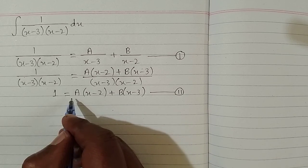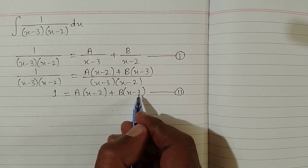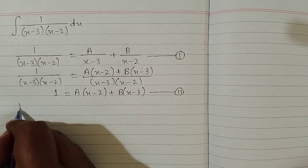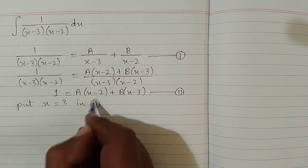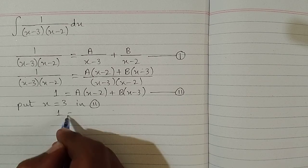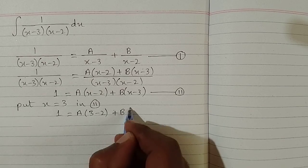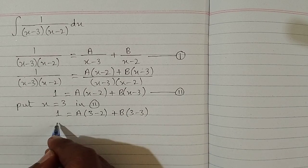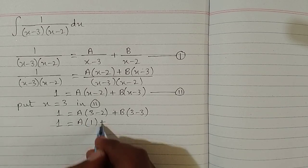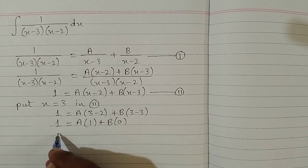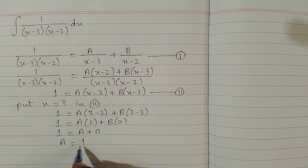Now we will find the value of A and B. We put x equal to 3 in the second identity so that the B term becomes 0. So we have 1 is equal to A times (3 minus 2), which is 1, plus A times (3 minus 3), which is 0. Therefore the value of A is 1.